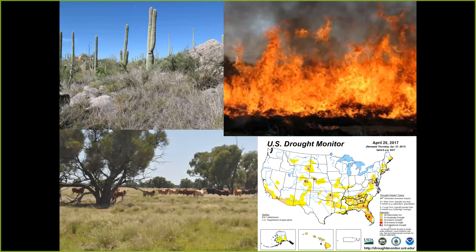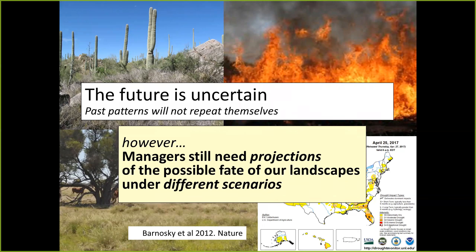Land managers working in rangelands face a variety of challenging problems. On the left we've got invasive buffalo grass in the Sonoran Desert as an example of invasive species. We've got the issue of altered fire regimes, which can be interlinked with invasive plant species. We've got land managers needing to make decisions about grazing intensity and duration. And we've got extreme weather events, for example drought, that are inherently unpredictable as to when they will occur. All of these challenges involve some elements of uncertainty, yet land managers are making decisions that may not play out for several years.